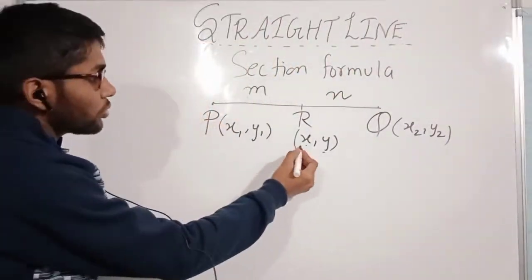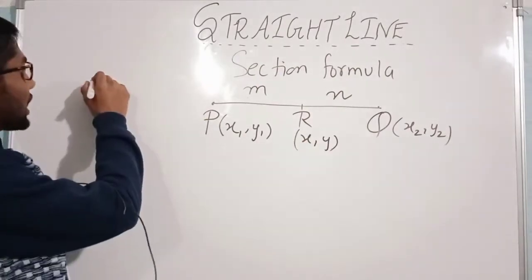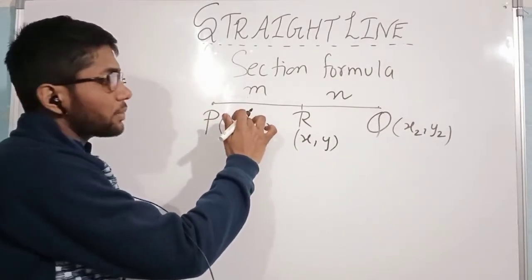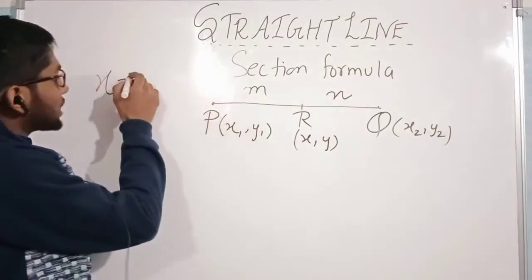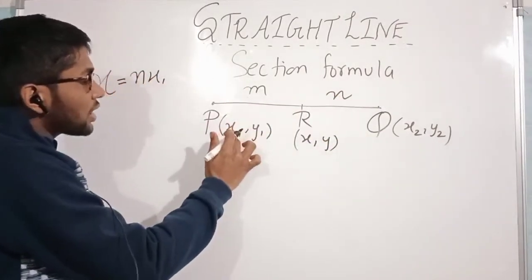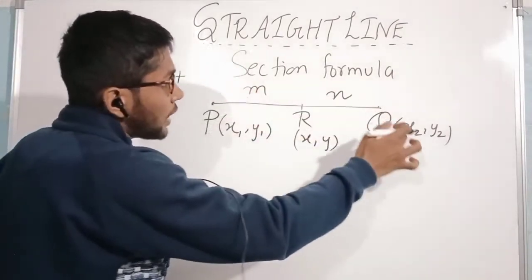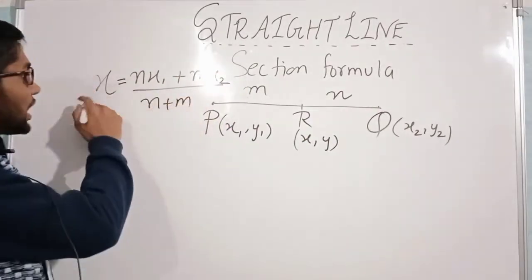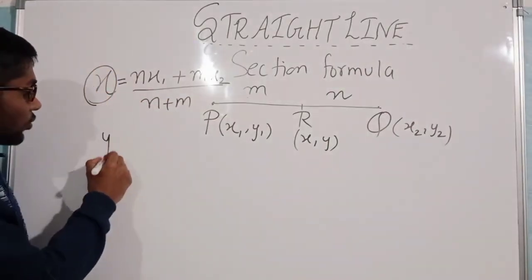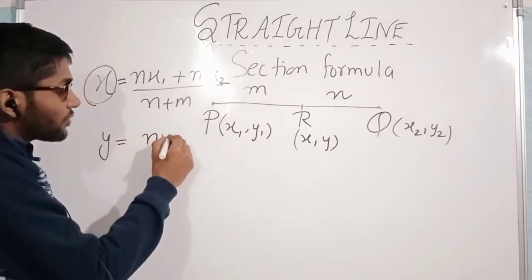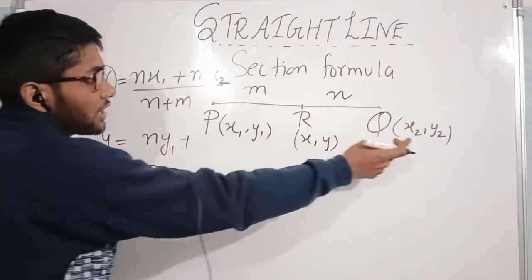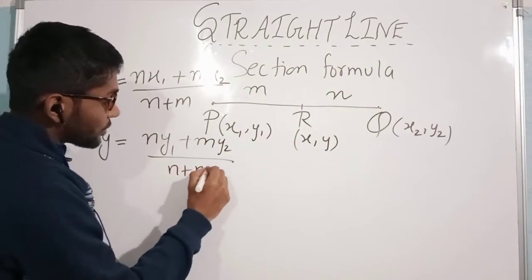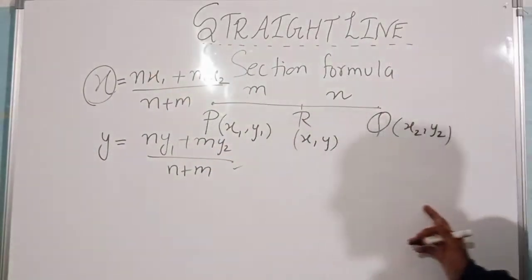So what formula do we get? We need to find the coordinates of R. The x-coordinate of R is: n into x1 plus m into x2, divided by n plus m. And the y-coordinate of R is: n into y1 plus m into y2, divided by n plus m. This is the section formula for internal division.